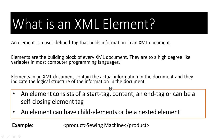There are some key facts about elements in an SML document. An element consists of a start tag, content, an end tag, or can be a self-closing element tag. An element can have child elements or be a nested element. Here is an example. This is an element — product. This is the opening tag and this is the closing tag for the product element. The product element tag holds the data 'sewing machine'.